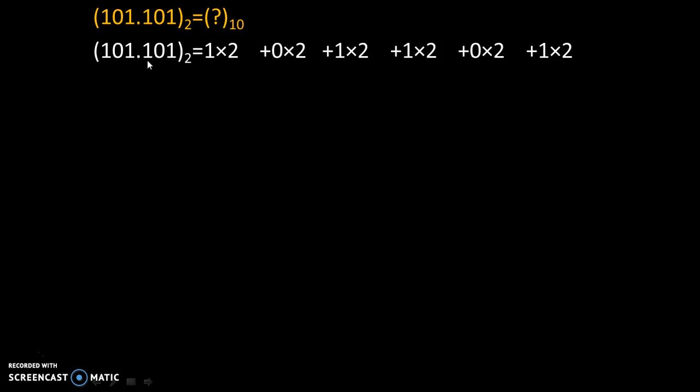After the decimal point, negative powers start. Now the simple method is to just count how many numbers are there after the decimal point. So 1, 2, 3. That's why we will start with 2⁻³. Over here it will be 2⁻², 2⁻¹. After that 2⁰, 2¹, and 2².